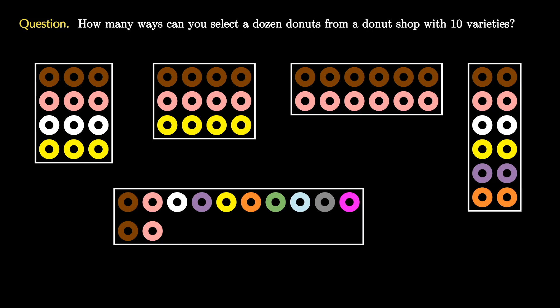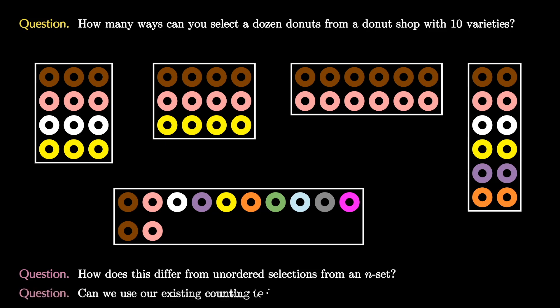These types of distributions are definitely unordered selections, but how do they differ from the unordered selections we've considered before, unordered selections of an n-set? Can we use any of our existing counting techniques to count the number of donut distributions from a dozen donuts into ten varieties?